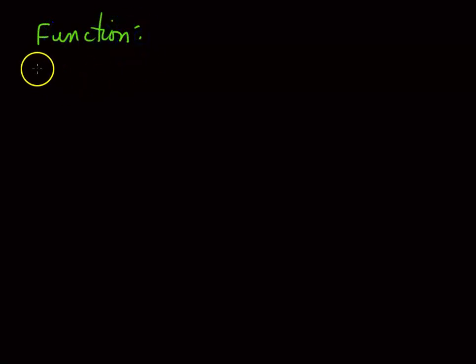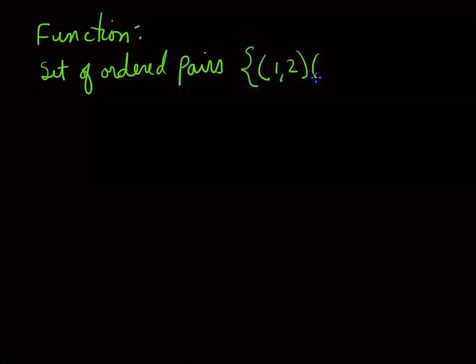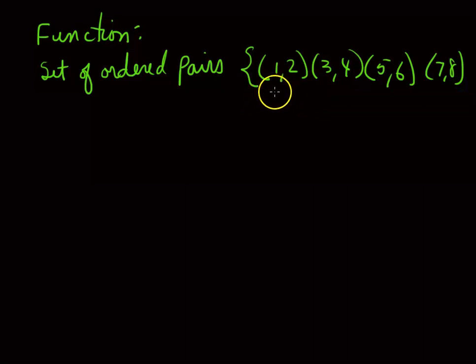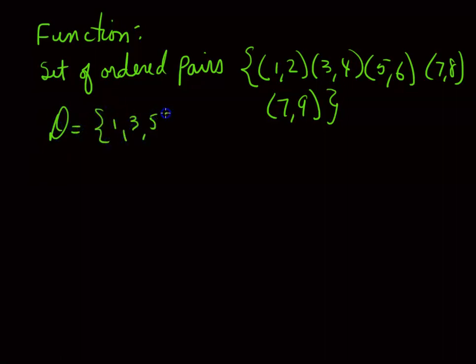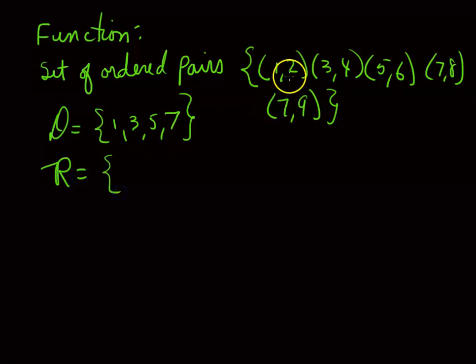You can write functions in different ways. One way is as a set of ordered pairs. For example: {(1,2), (3,4), (5,6), (7,8), (7,9)}. The X values — 1, 3, 5, 7 — form the domain, and the Y values — 2, 4, 6, 8, 9 — form the range.